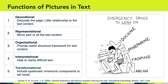Finally, we have the transformational function of a picture in text. The transformational function is to include some sort of mnemonic component to aid recall. In this example, we see the LEAN mnemonic, which describes which drugs should be used to lean on in case of an emergency: Lidocaine, Epinephrine, Atropine, and Narcan. So those are the five functions of pictures in text. We sometimes take these functions for granted, but there are nuances to all of them. Knowing the different ways text and graphics can work together is part of our responsibility as visual designers.